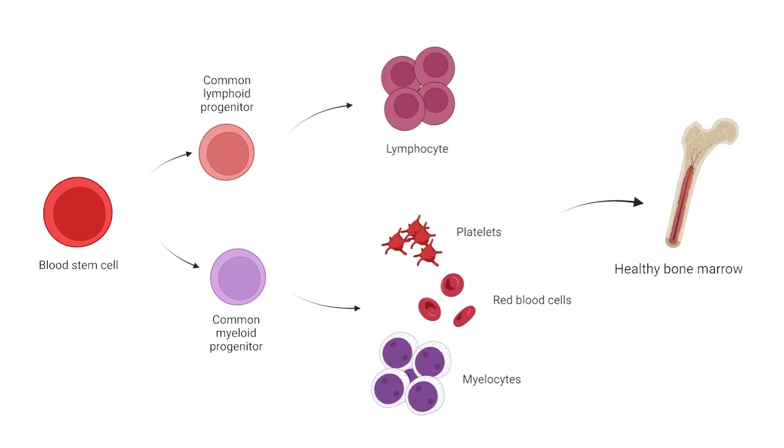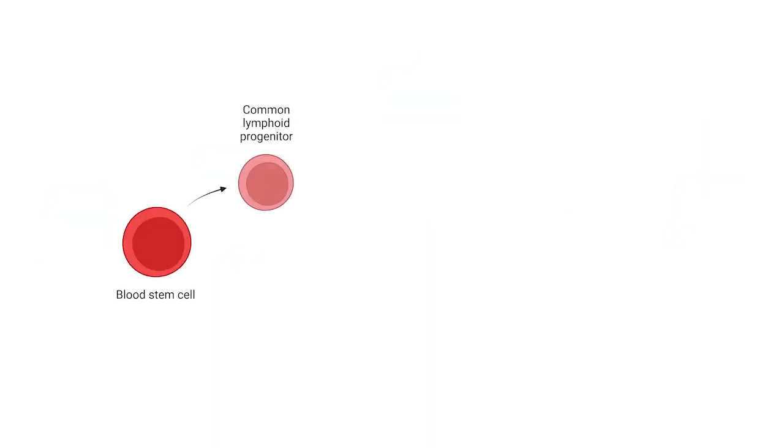Blood cells develop in the bone marrow from blood stem cells in a process called hematopoiasis. Disruptions in this process lead to acute lymphoblastic leukemia, which is the most common cancer in children.